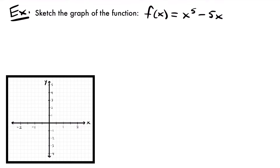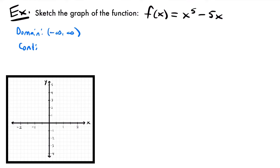To find the domain, you would typically want to look at what is going to make your function not continuous — where are you going to have a gap or a break? Luckily this time we have a polynomial function. We just have the terms x to the fifth power and negative 5x, which are continuous for all values of x. There's no value of x that if we plugged it in we'd get an undefined value. So the domain of this function is from negative infinity to infinity — it is defined for all values of x and continuous everywhere. That also means we can determine that this function is continuous everywhere, which goes hand in hand with the domain.